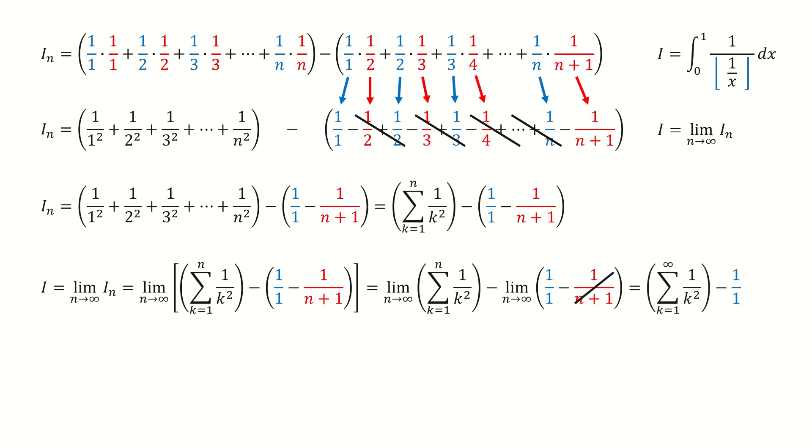And then we write the first term as the series notation. And we know this famous series, it equals to pi square over 6. So we got the final answer.